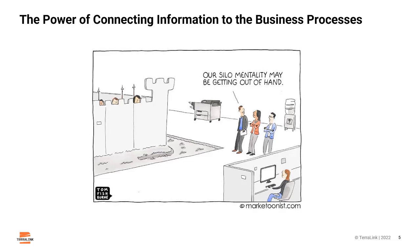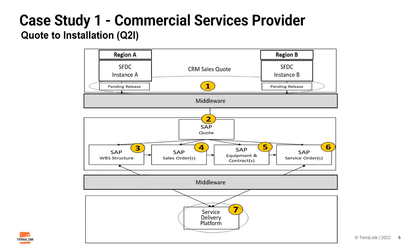Many times the data flow is not directly correlated to the business processes. Sales does selling, procurement does procuring, manufacturing does manufacturing, and so on. But the data does not always flow from system or application to the next department or job function in the overall business process or cycle. We're talking about the very data that would enable the business process automations and productivity gains every enterprise desires to attain.